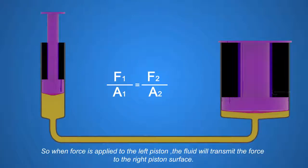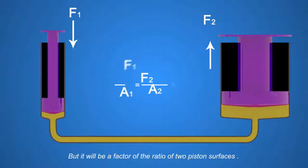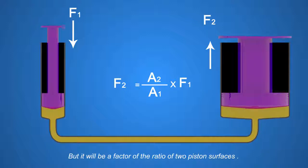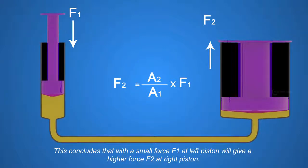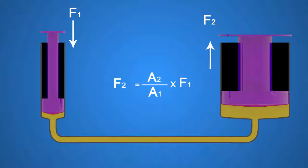So when force is applied to the left piston, the fluid will transmit the force to the right piston surface. But it will be a factor of the ratio of two piston surfaces. This concludes that with a small force F1 at left piston will give a higher force F2 at right piston, provided if A2 is greater than A1.